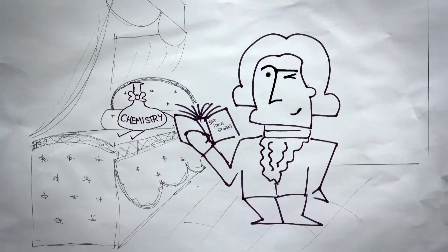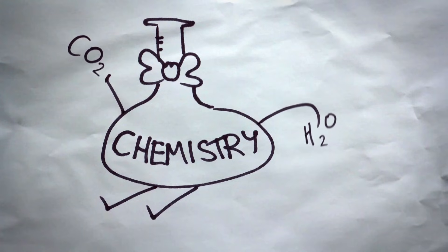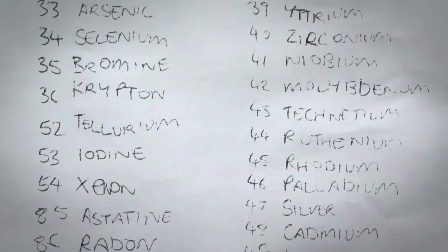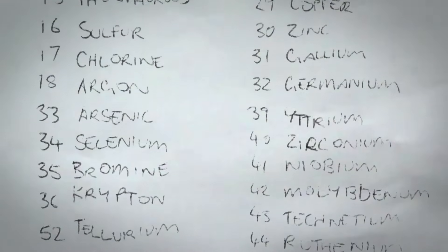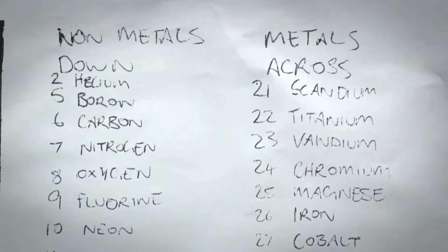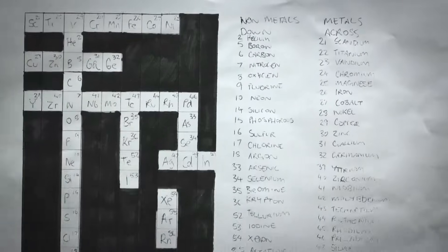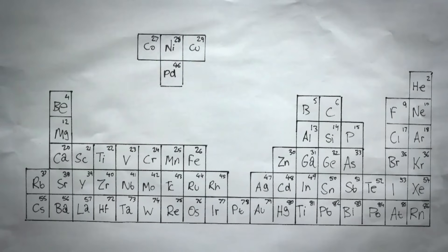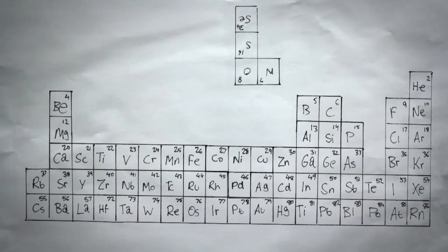Lavoisier defined an element as a substance that could not be broken down by existing chemical means. Lavoisier created a list of the known elements of his time and tried to put the elements in some sort of order in which they could be classified, such as gases or metals. He was the first one to try to put the puzzle together. This was just the beginning of a means to organize the known elements of his time.